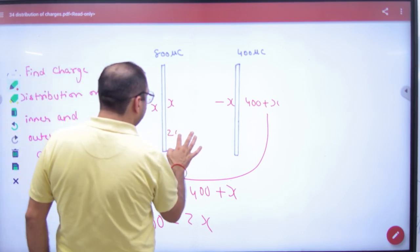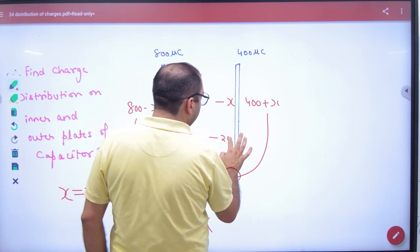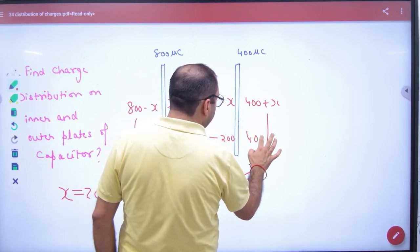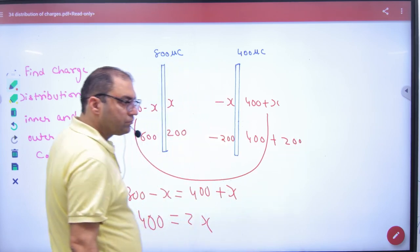What is the charge here? 200. What will be 600? So what will be here? Minus 200. What will be 400 plus 200? 600. Point clear here.